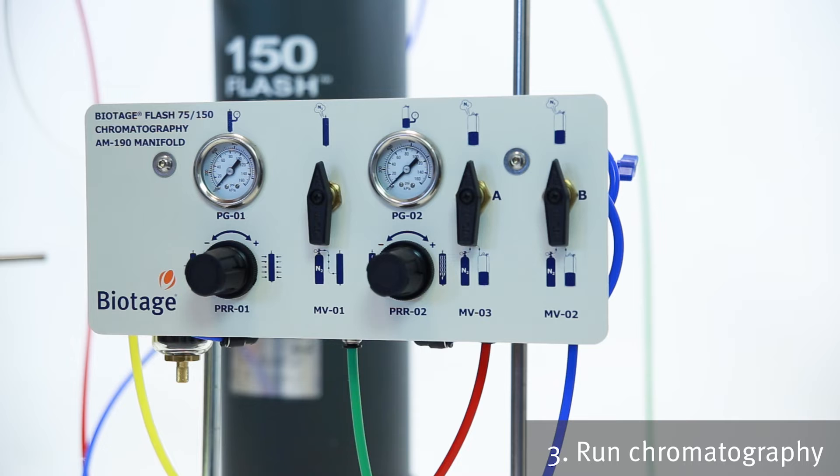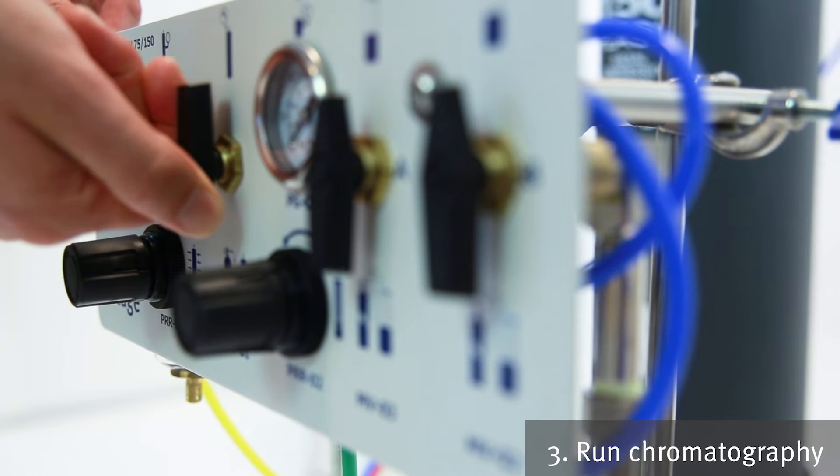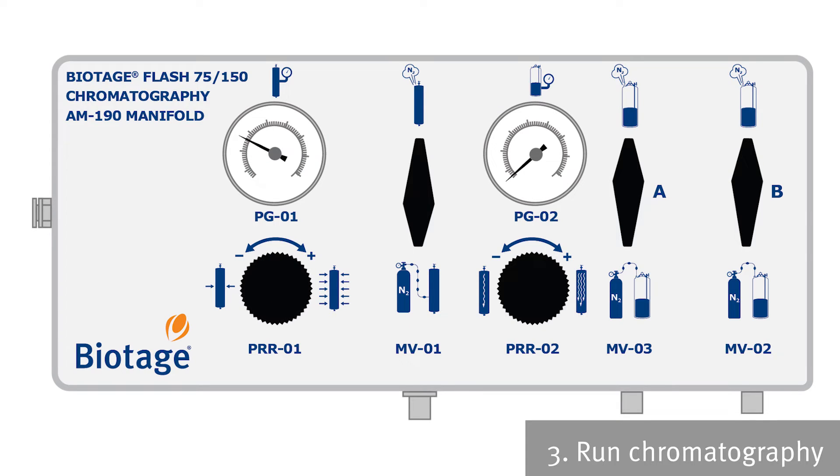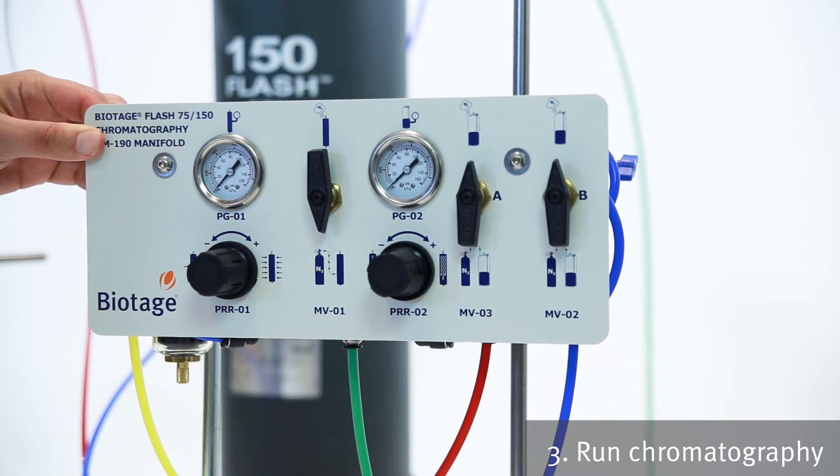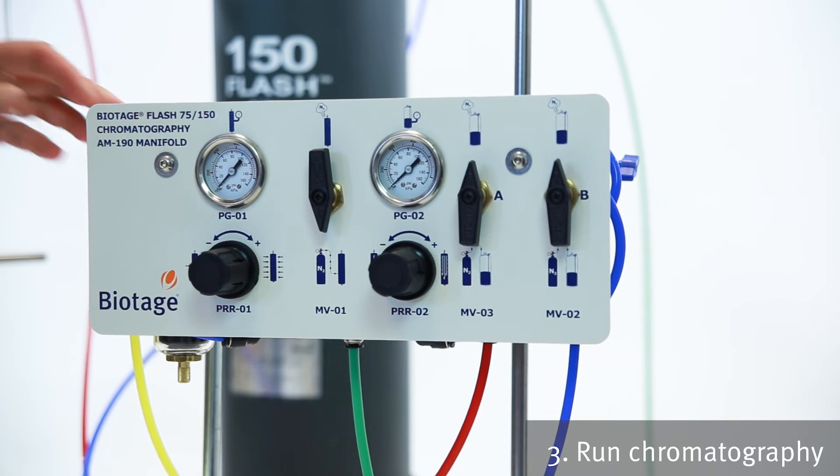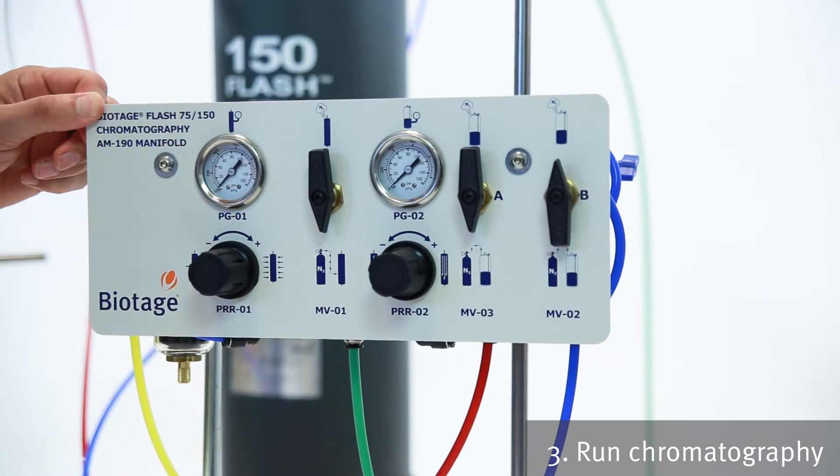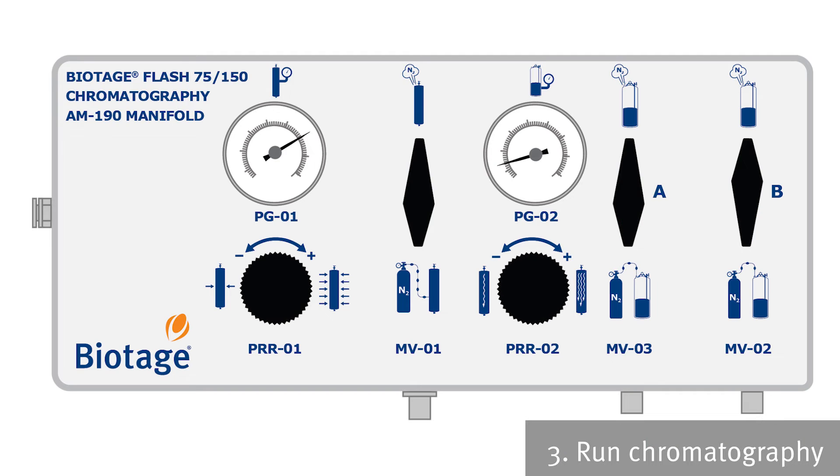So first up, we've got to make sure that the pressure is 100 to 120 psi. And then we're going to make MVA1 live. And then set the pressure that we want to run the system at. This is going to set the pressure for the radial compression module. Next up, we're going to pressurize our solvent tank. We're on solvent position A. So we're going to go live on MVA3. Set the pressure to the tank. We're good to go.